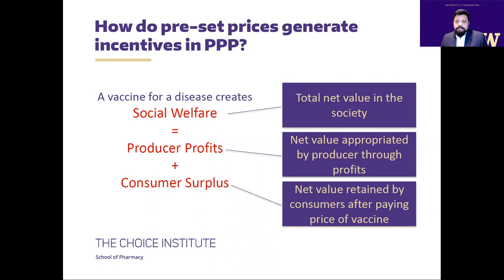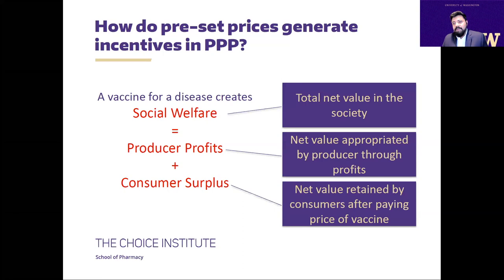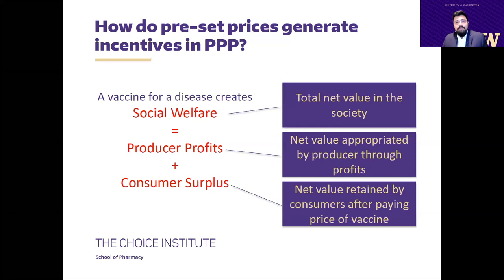To determine what price to pre-set for a vaccine, economics uses the concept of welfare. A vaccine for a disease creates social welfare — the total net value in society, net of paying for manufacturing costs, with all benefits accruing to that value. This total social value can be split into two parts: one appropriated by the producer through profits, and the rest accruing to the rest of society. For a given efficacy, the total social value is constant — a knowable quantity through good modeling exercise.